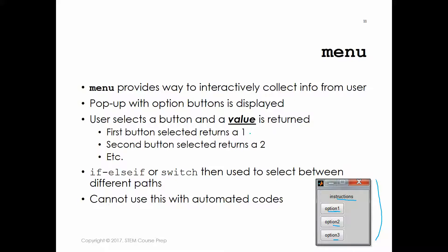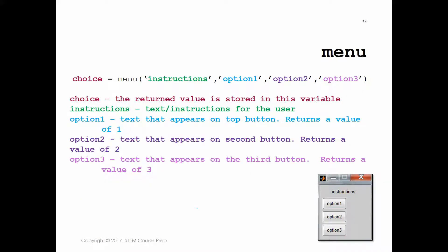Once you get your option in, you're usually going to use if/else-if or switch/case to select between the different paths. Obviously you don't want to use the menu function if you want automated code, because somebody has to be there to actually hit the button. Let's go over the setup on how we create this in our code.